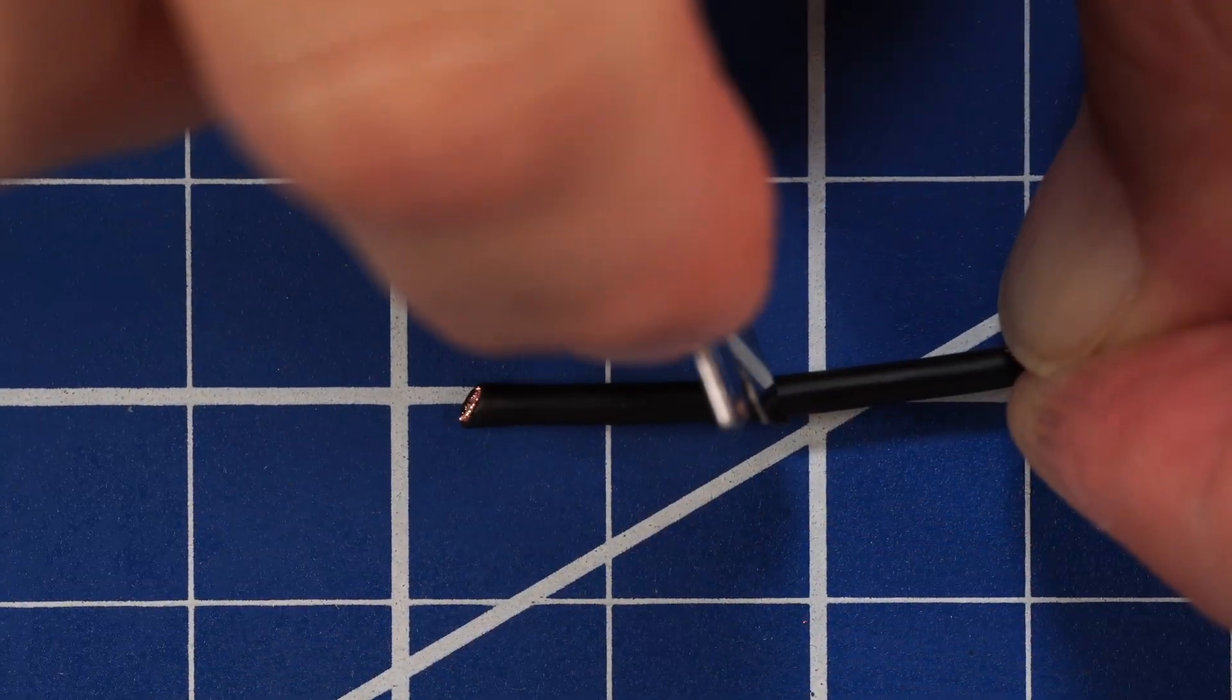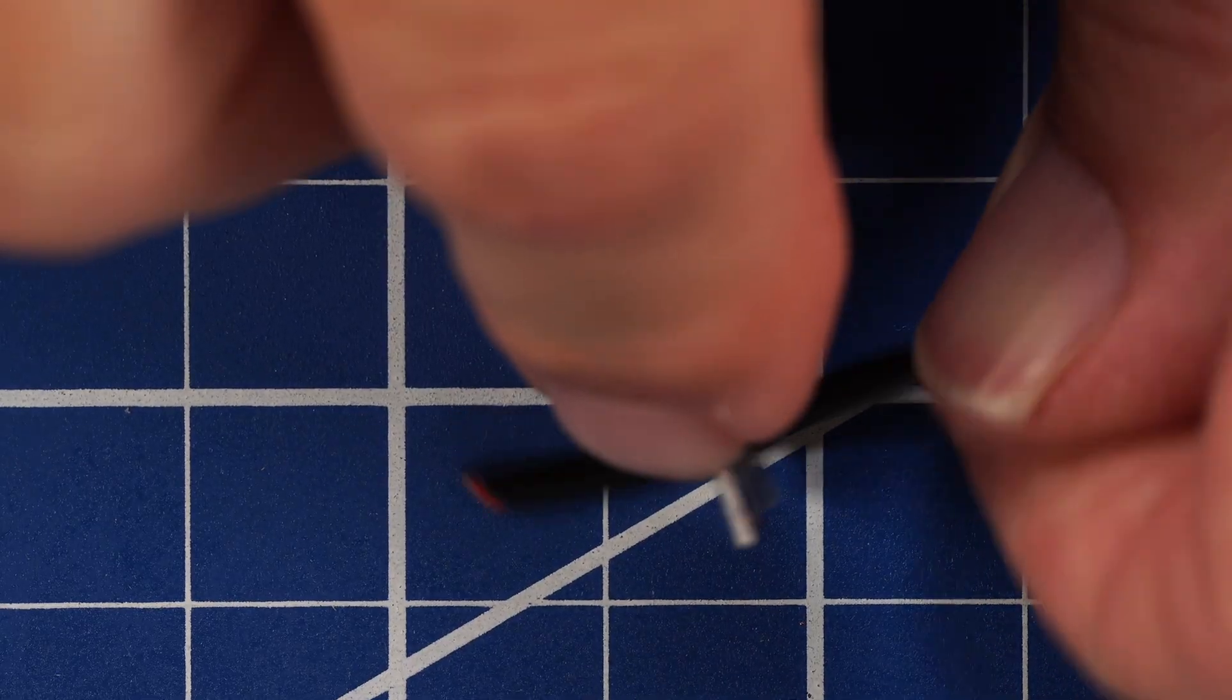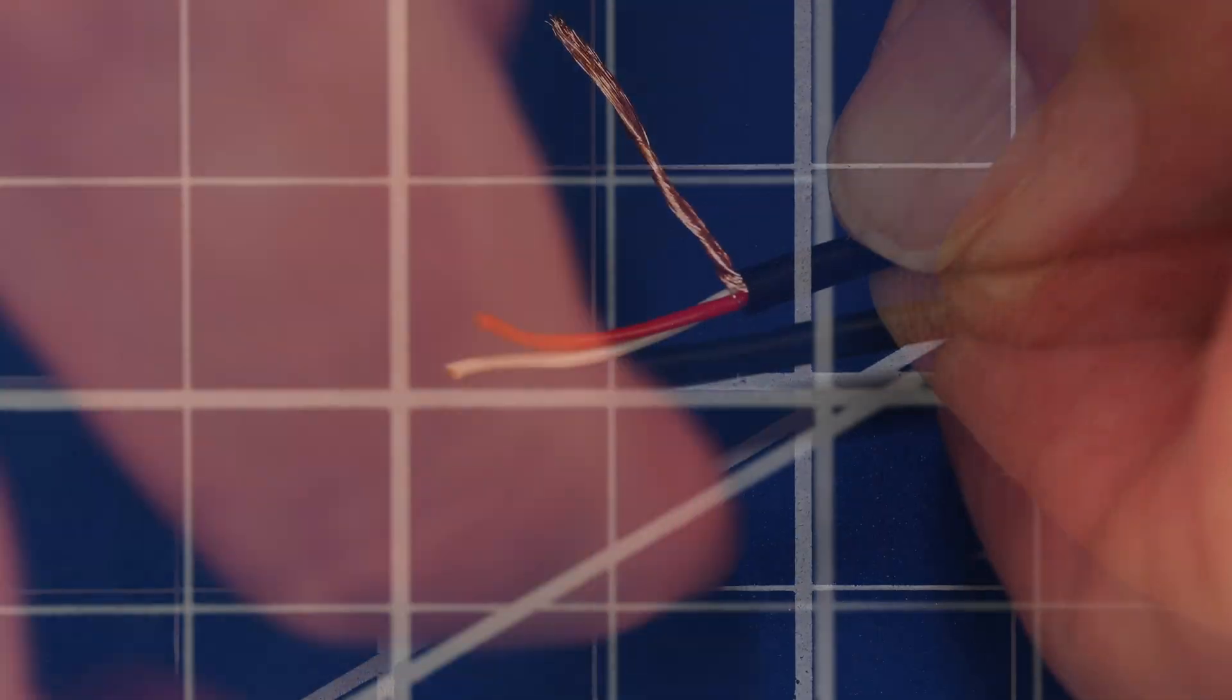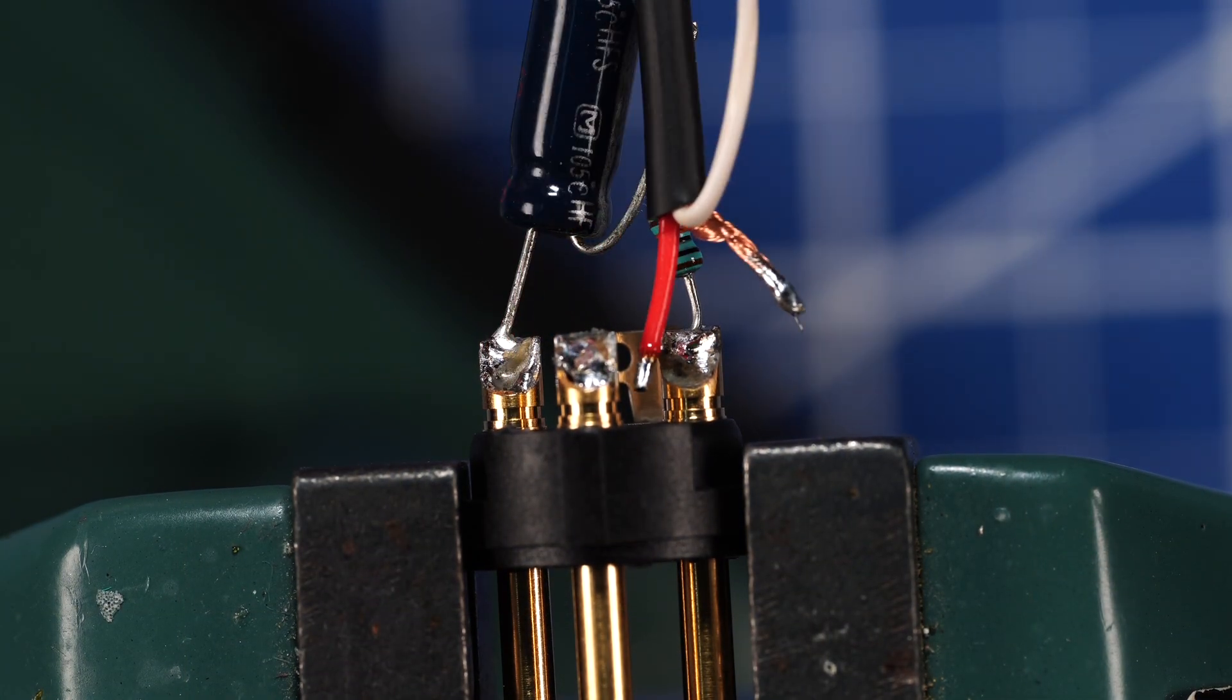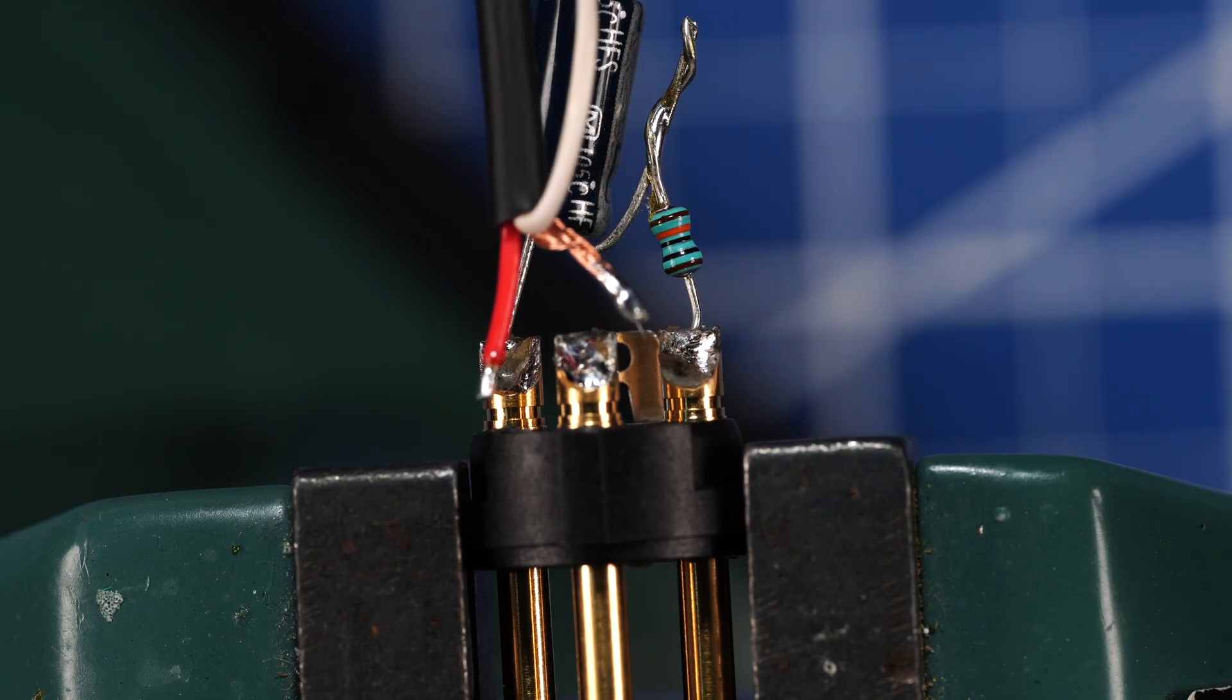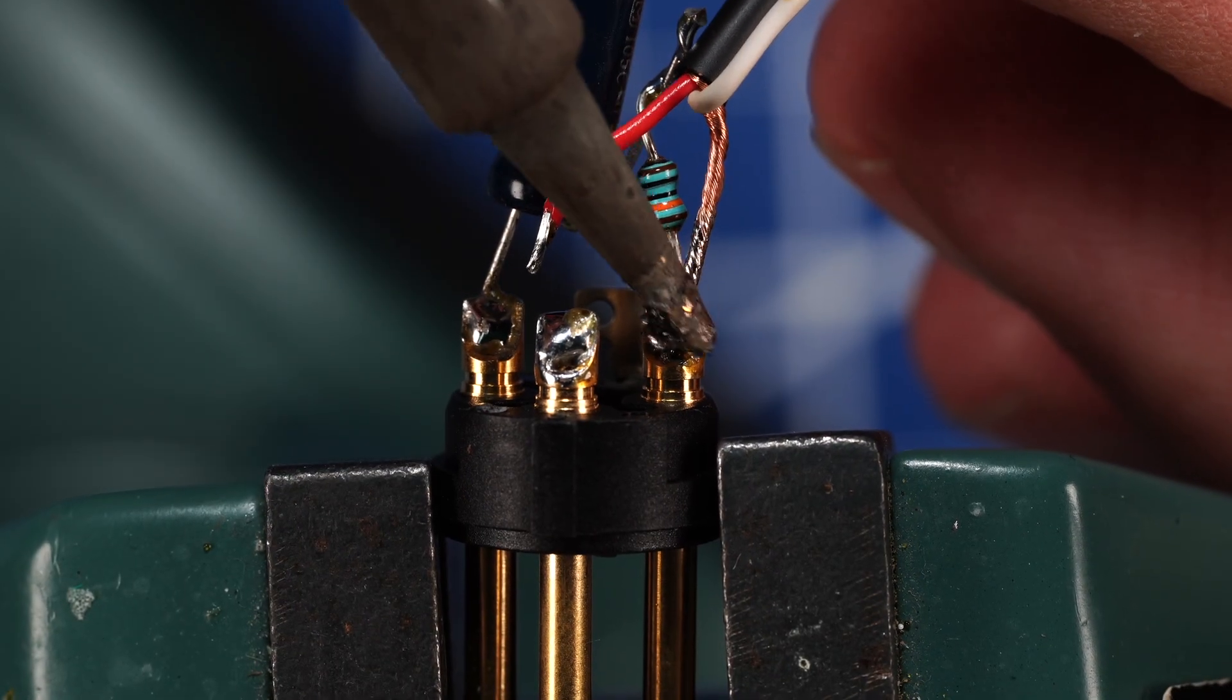You can make them shorter if you're going to mount the recorder close to the mic. Prep a piece of Mogami by sliding on the XLR boot and then stripping off a little more than half an inch of the outer insulation. Cut the red wire to about a quarter of an inch and strip just a bit of the end of both the white and red wires. Tin those, then bend the white wire up as shown.